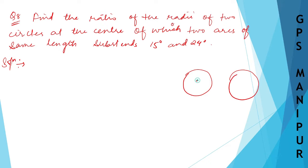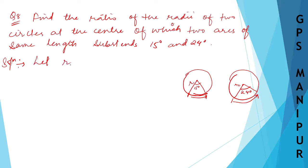There is one radius here and another one like this. This one sustains an angle of 15 degrees here, and this one sustains an angle of 24 degrees here. The arc length from here to here and from here to here is the same. So what we need to find out is the ratio of r1 and r2.